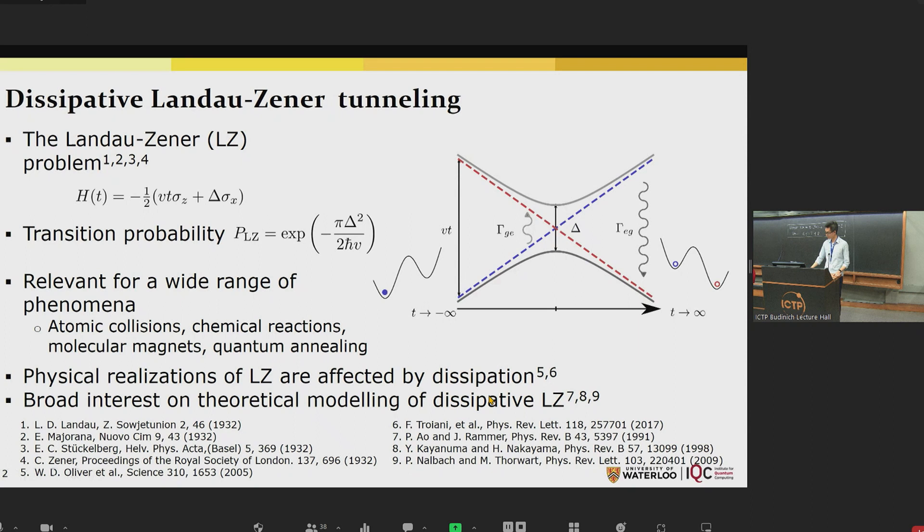So what does this problem have to do with quantum annealing exactly? In conventional quantum annealing, we would like to have an adiabatic evolution so that the system stays in the ground state and eventually ends up in the low energy state of an Ising Hamiltonian, which corresponds to a hard problem that we want to solve. This is despite the system going through some minimum gap in the middle of the evolution. Dissipation is an important factor in determining the success probability, or the probability that the system can remain in the ground state.